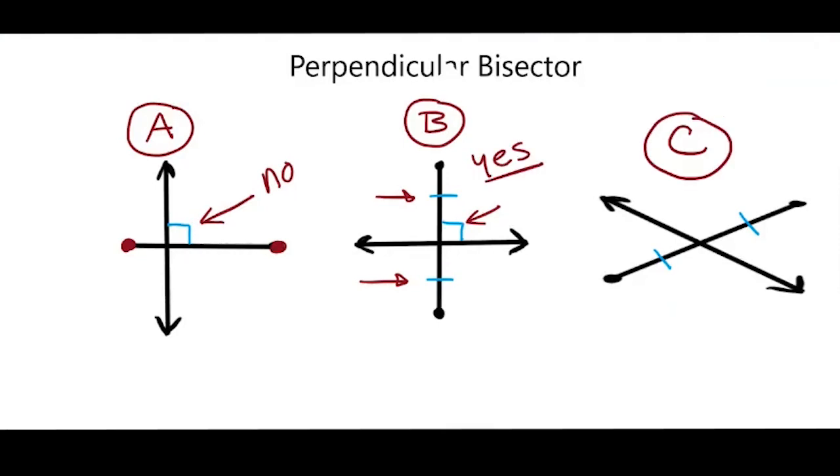For Figure C, I see that I have two congruent line segments, but this is not a right angle. So for C, I would say no. And that's how you tell if you have a perpendicular bisector.